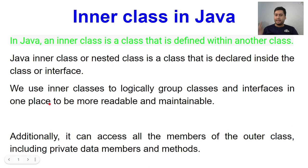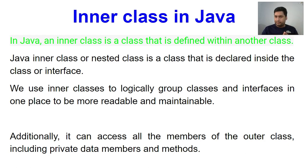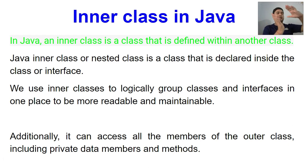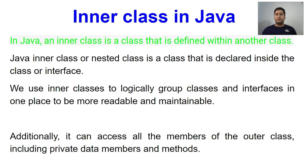We use inner classes to logically group classes and interfaces in one place to be more readable and maintainable — those are two important keywords to remember. Additionally, an inner class can access all the members of the outer class, including the private data members and methods. So if an inner class tries to access the outer class's private methods, that is possible and it can easily access them.